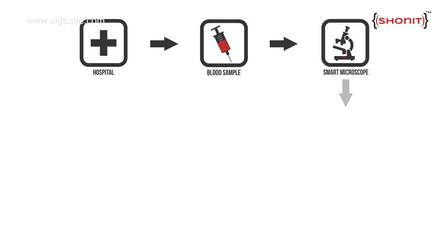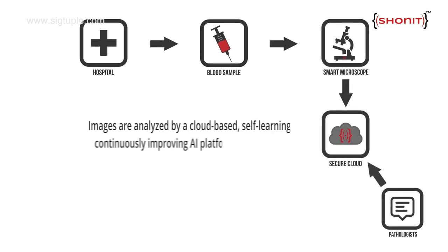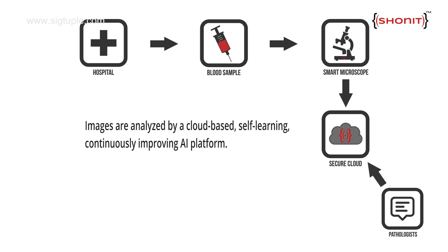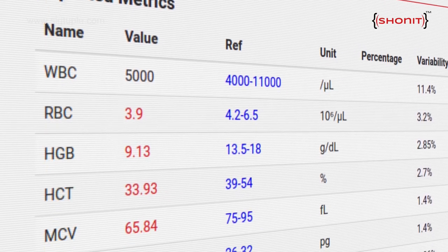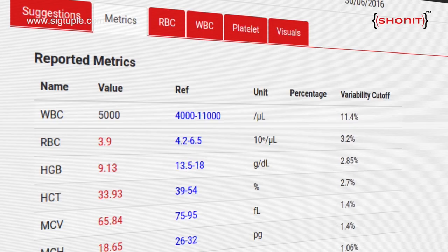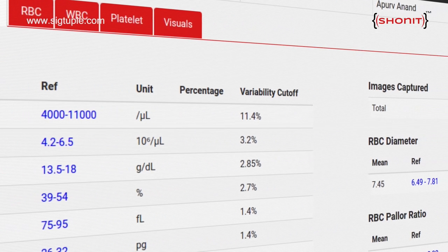In the cloud, our artificial intelligence platform crunches through these images and comes up with a blood report. This report consists not only of the standard parameters like the five-part differential, the total counts, and the RBC indices, but it also has suggestions of different conditions that the person might be having.